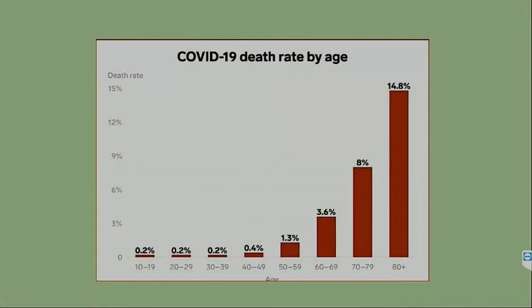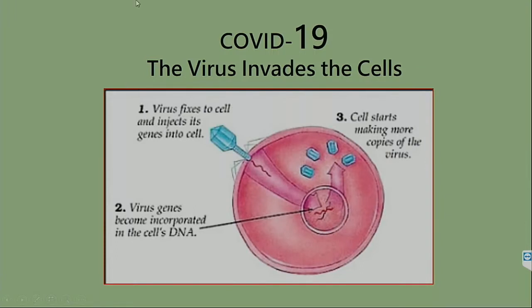This is a chart I use from Dr. Gulati. But you notice that between the ages of 0 and 10 there are no death rates. Do you know why? Because the immunity is so strong in these people. And as people age, the immunity gets less.